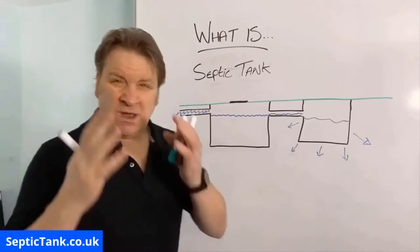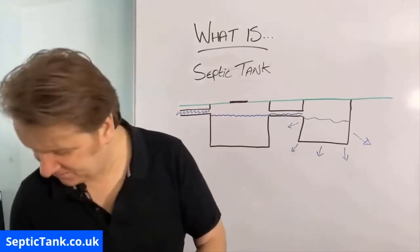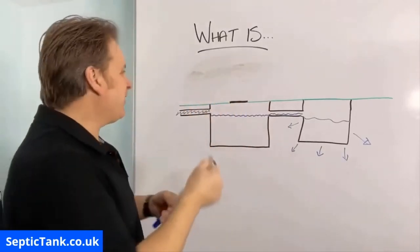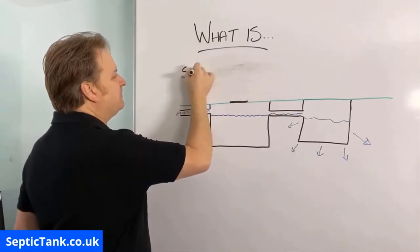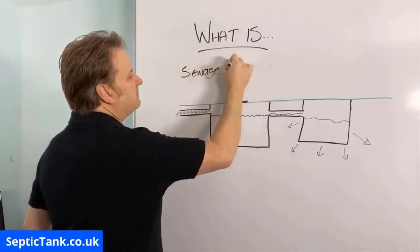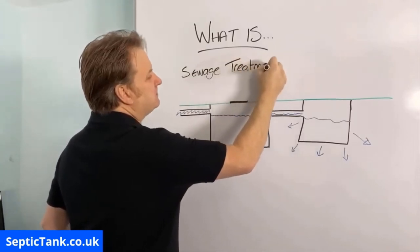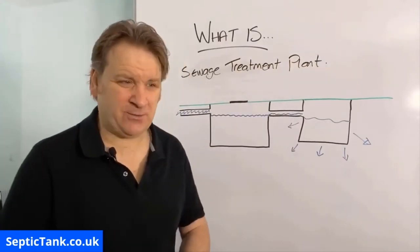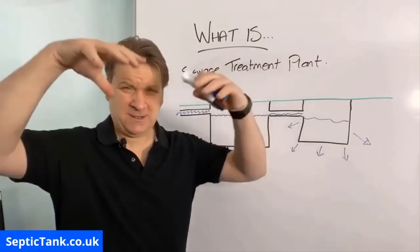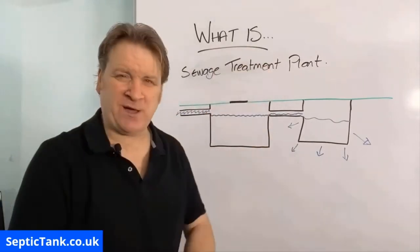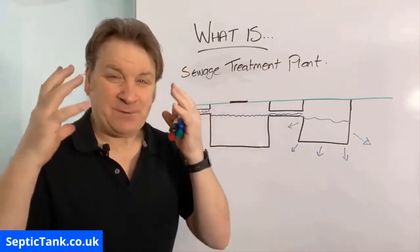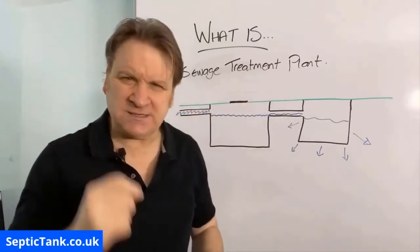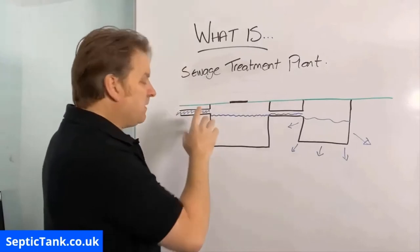So what is a sewage treatment plant? This can get quite confusing but I'll keep it really simple. Now if you go to the edge of a city or town you'll see massive circular concrete rings with rods going around — that's a massive sewage treatment plant. But a domestic one for you and me living at home — that's what I'm talking about here.